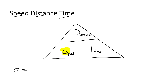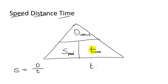So if you want to find speed, using the triangle you say equals, and the distance is at the top and time is over there. So it's distance divided by time. Now if you want to find time, T equals distance over speed — D over S — because the distance is at the top and the speed is at the bottom.